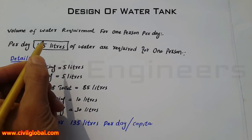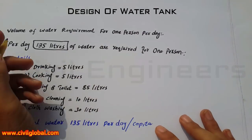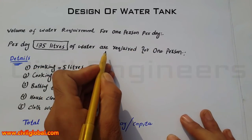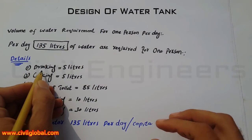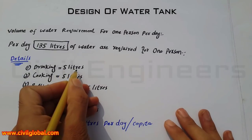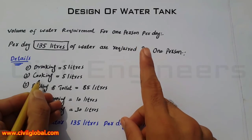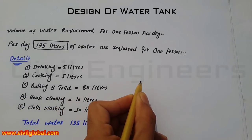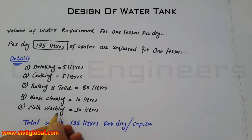First of all, we have to find out the water requirement for one person per day. Per day, 135 liters of water are required for one person. The breakdown is: drinking — 5 liters, cooking — 5 liters, bathing and toilet — 85 liters per day per capita, house cleaning — 10 liters, and cloth washing — 30 liters.